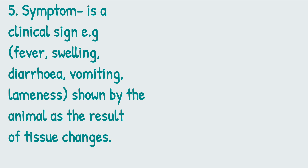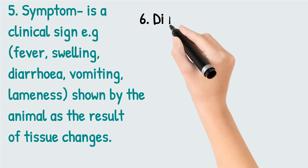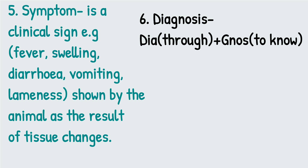Number five is symptom. A symptom is a clinical sign — for example, fever, swelling, diarrhea, vomiting, and lameness — shown by an animal as a result of tissue changes. When the animal tissue is changing, the animal begins to exhibit clinical signs as a result. Number six is diagnosis, which means to know the disease state through clinical signs. Lesions result in symptoms, which lead to a diagnosis.